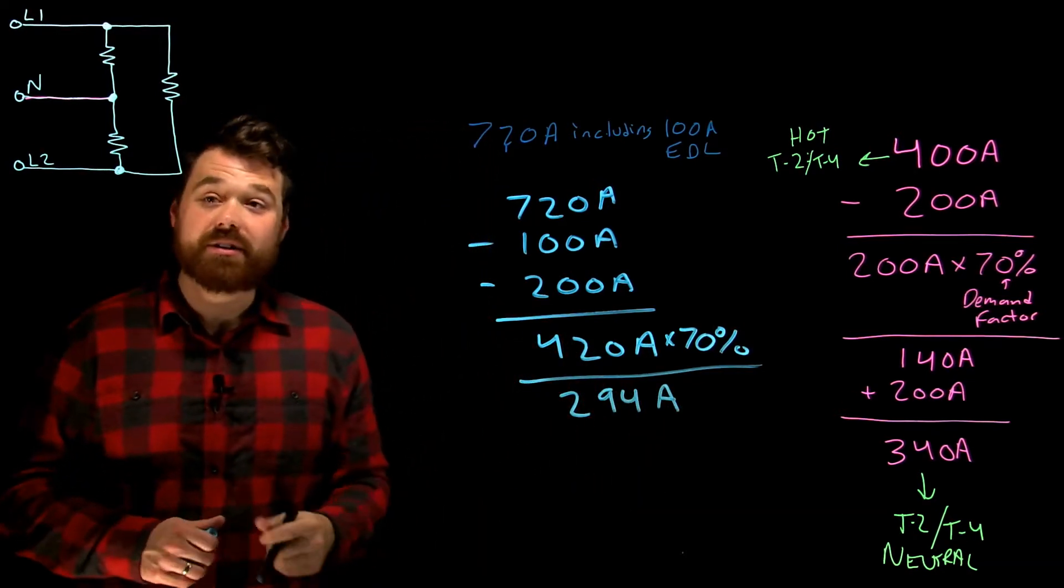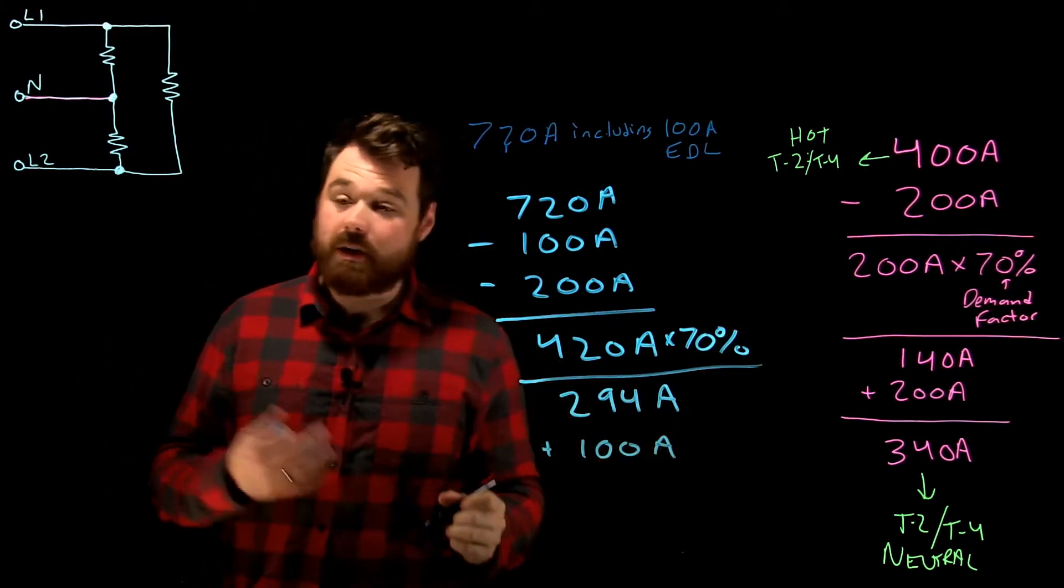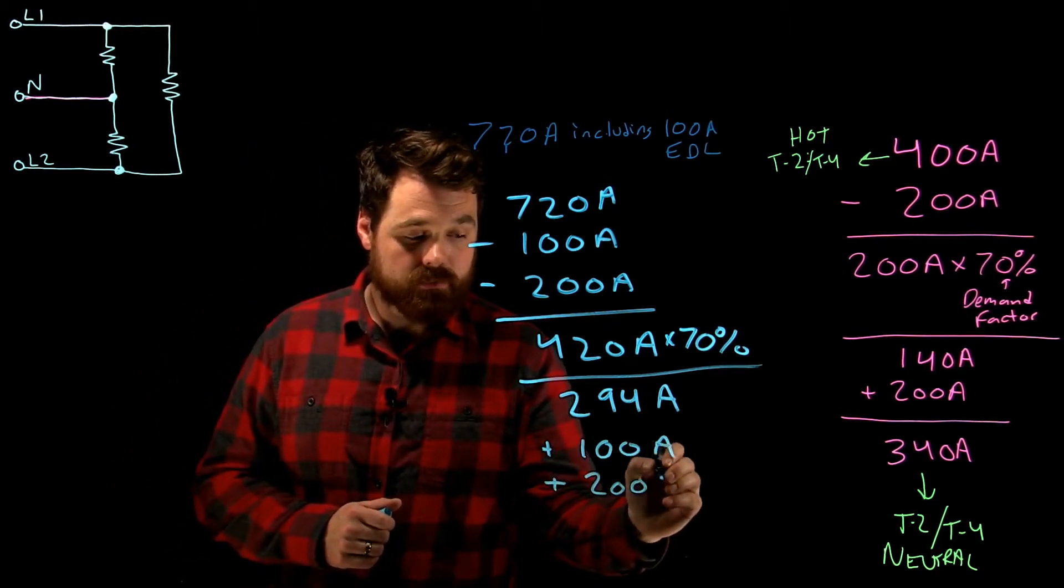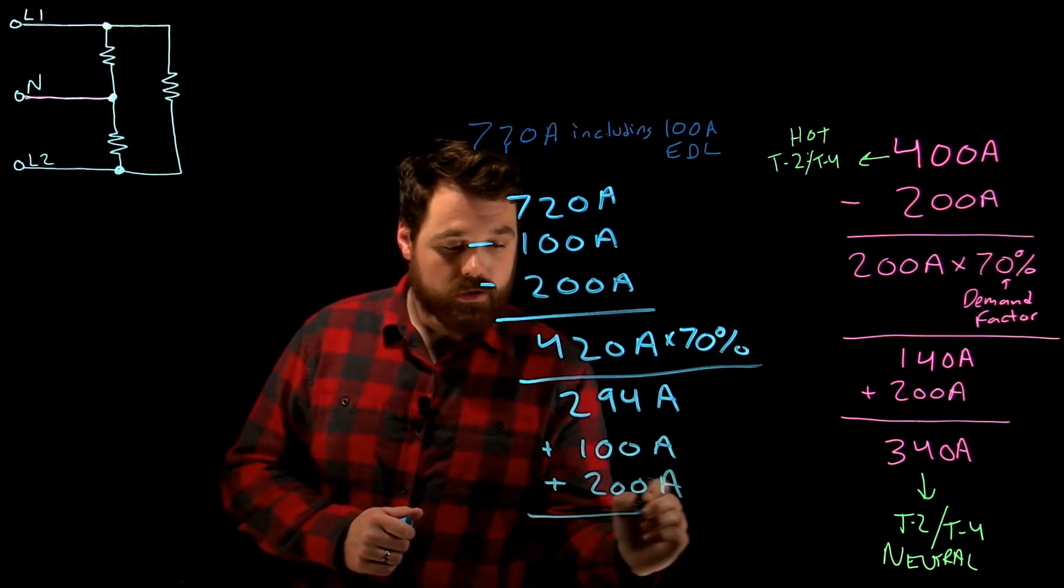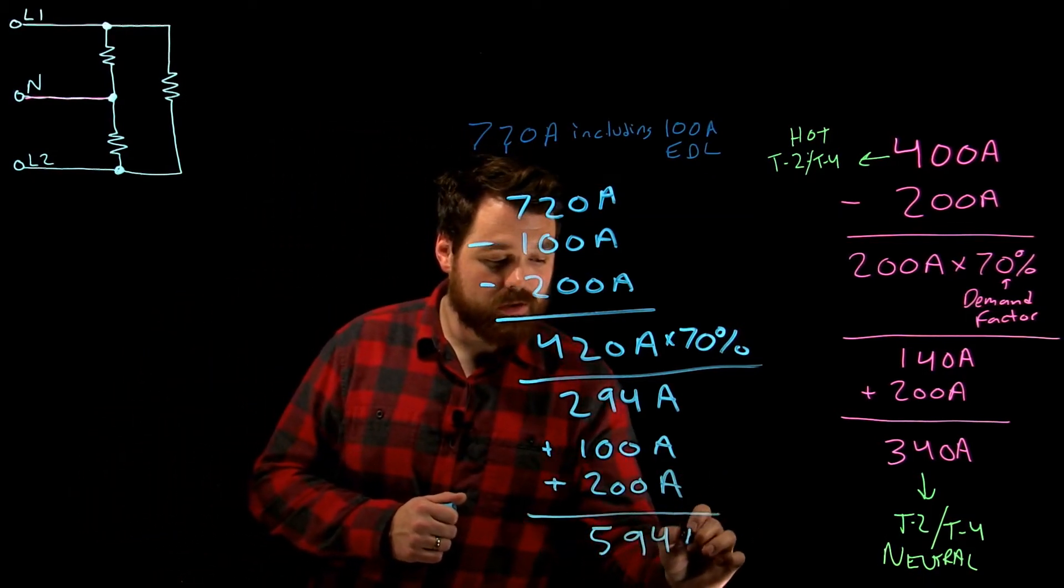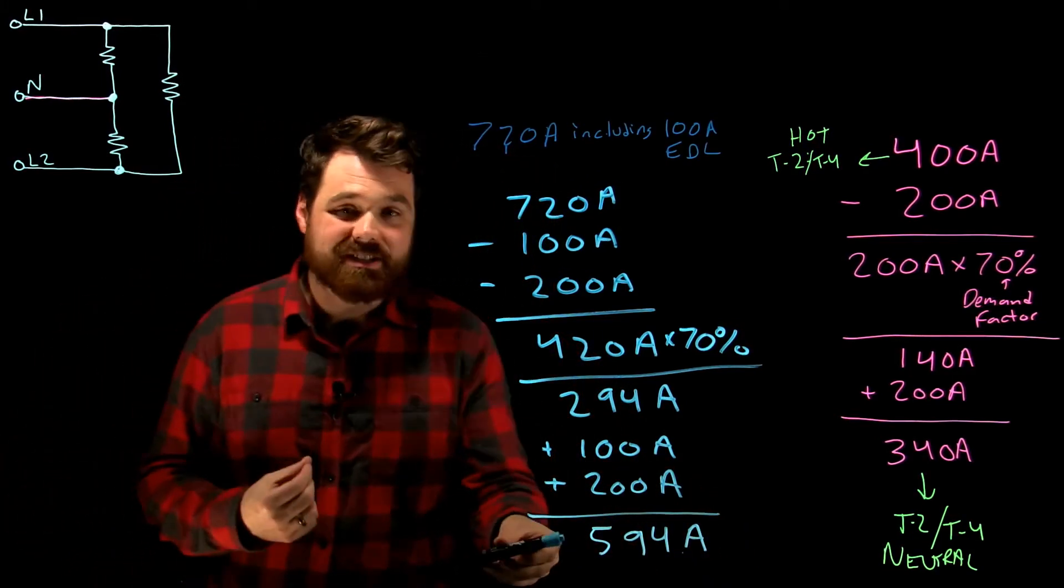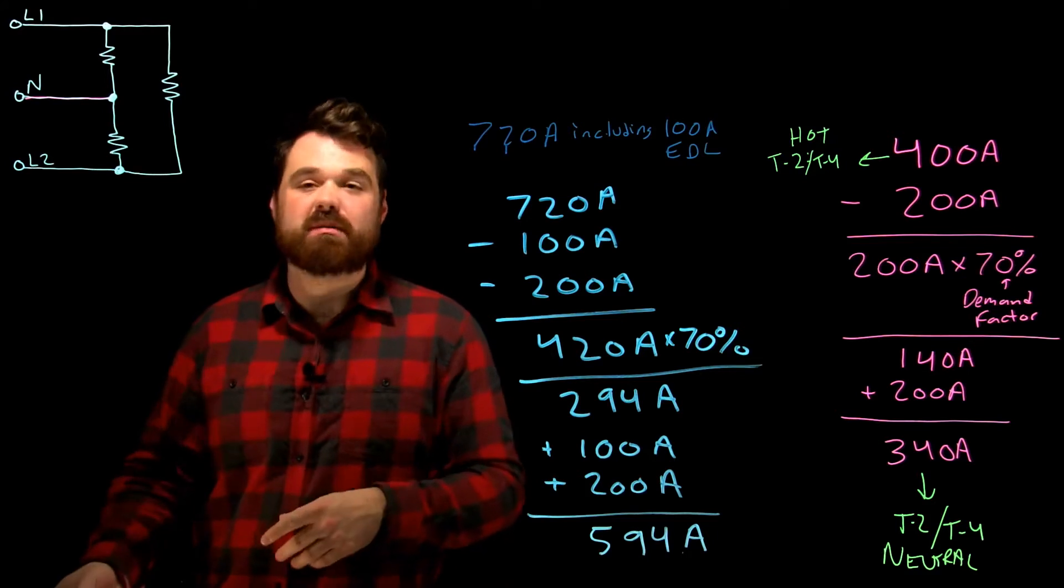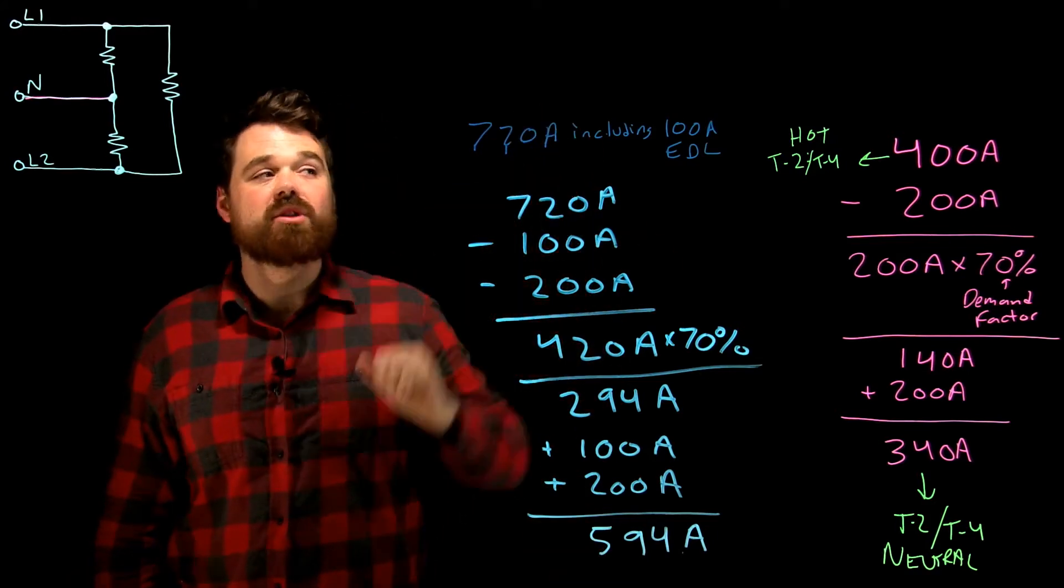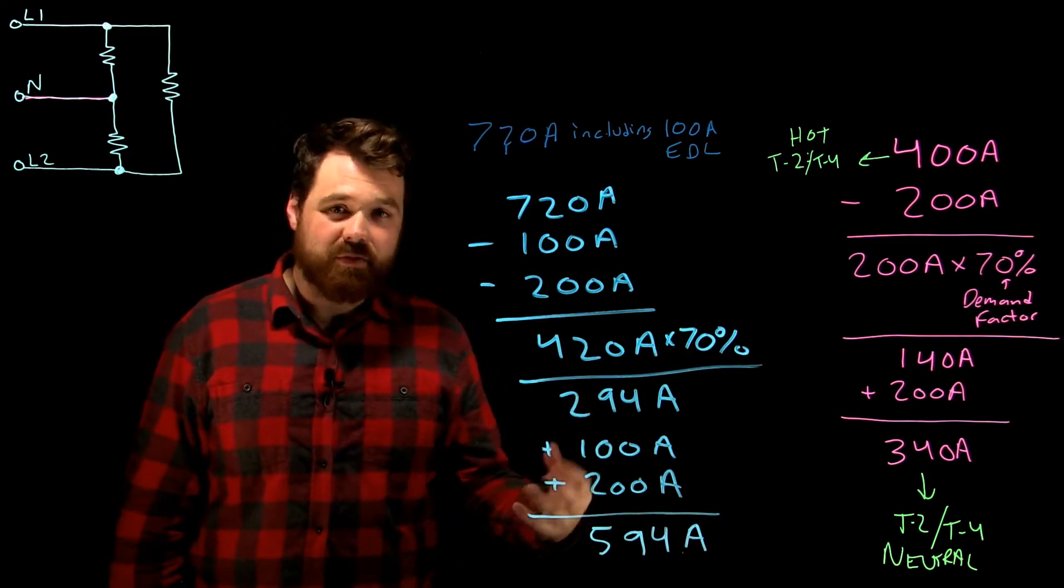Then what I need to do is I have to add back in my 100 amps. I need to add back in my 200 amps. And in this case, I get 594 amps. Now that is the required ampacity of my neutral conductor. So I would size my neutral conductor based off of 594. My hots would be based off of that 720. Then I would size those on table 2 or table 4.